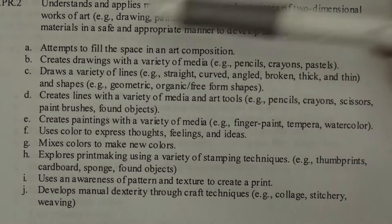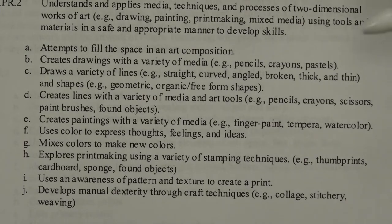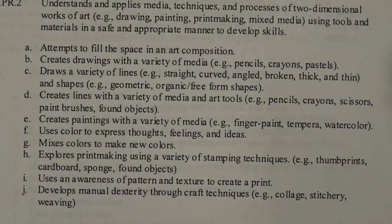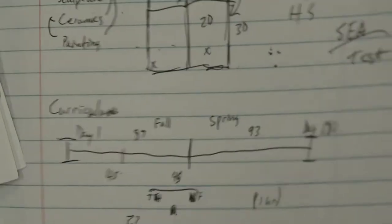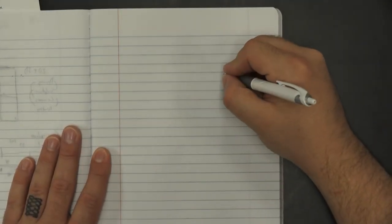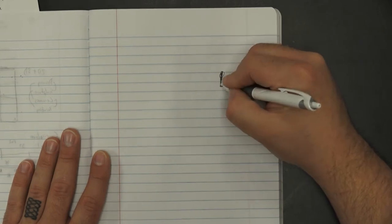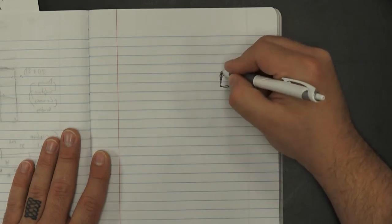Sub-item A: attempts to fill in space in an art composition. We believe that all elementary kindergarten kids should have an understanding that when they illustrate across a piece of paper, when we give them a piece of paper, they don't sit on one side of it and just draw a dog. Let's just do a little kid elementary house.